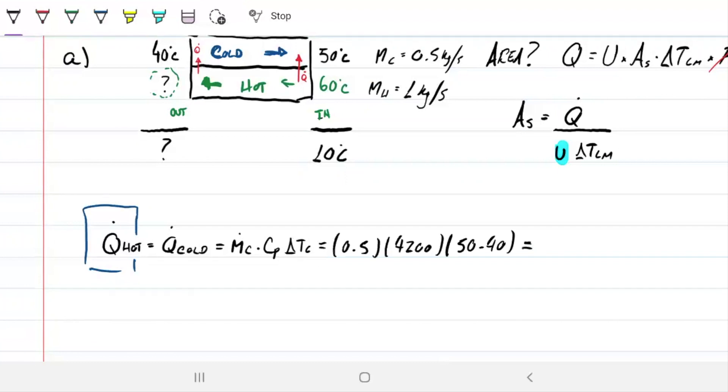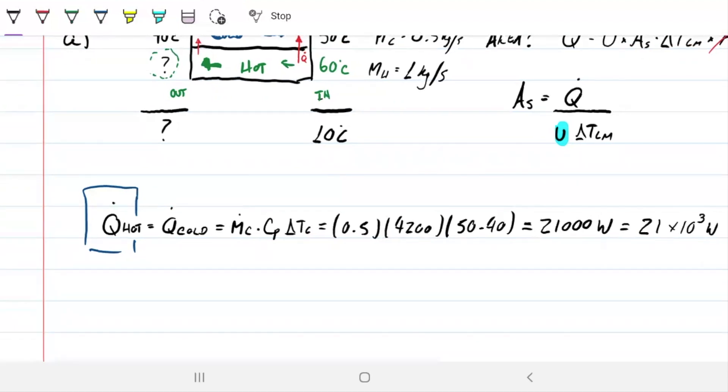Our cold water goes from 40 to 50, so the delta T there on the cold is 10. This turns out to be 21,000, which is 21×10³ watts. Nothing new here, we all know this. But what we can also do is make them equal.